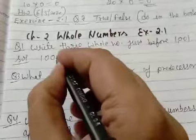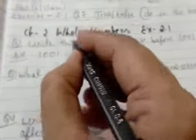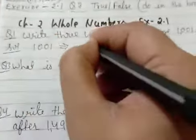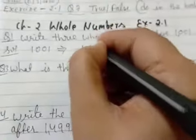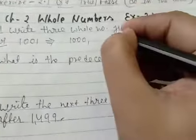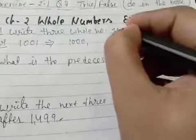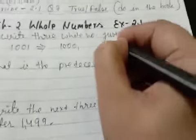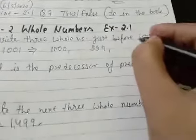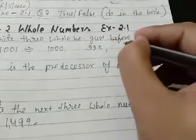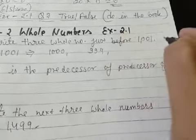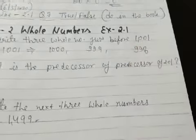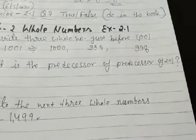Now, we have to find out the predecessor of the given number. Predecessor of 1001 is 1000 — we got the second number. Predecessor of 1000 will be 999, and predecessor of 999 will be 998. This is the answer.